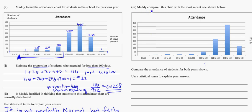So for part two of this question, Maddie is comparing the most recent chart, which is the one below, to the previous year. So this is now, and this is last year. Compare the attendance of students for both years shown, and use statistical terms to explain your answer.